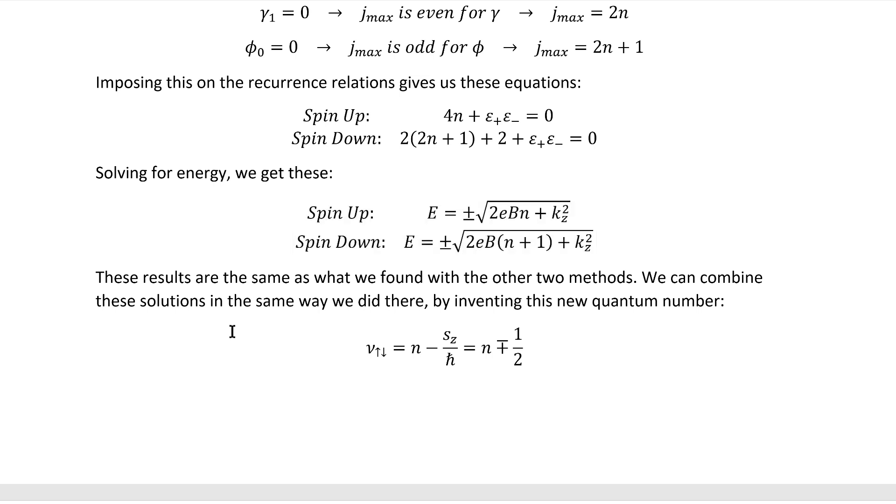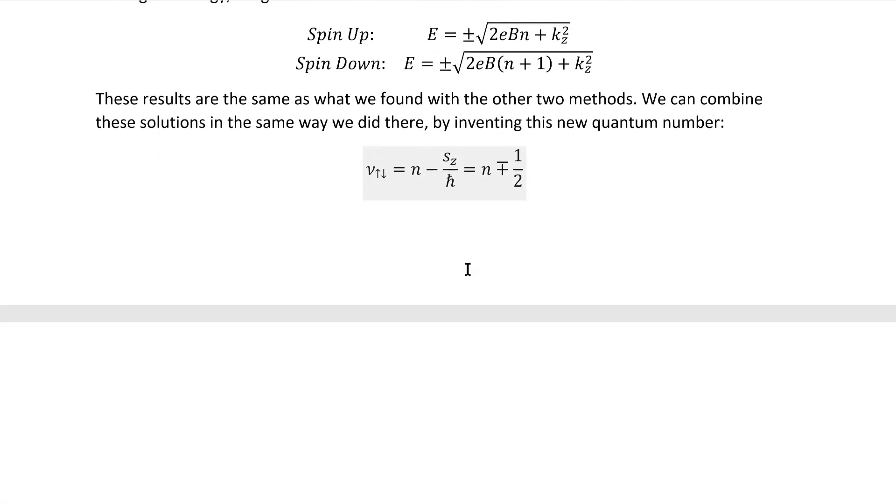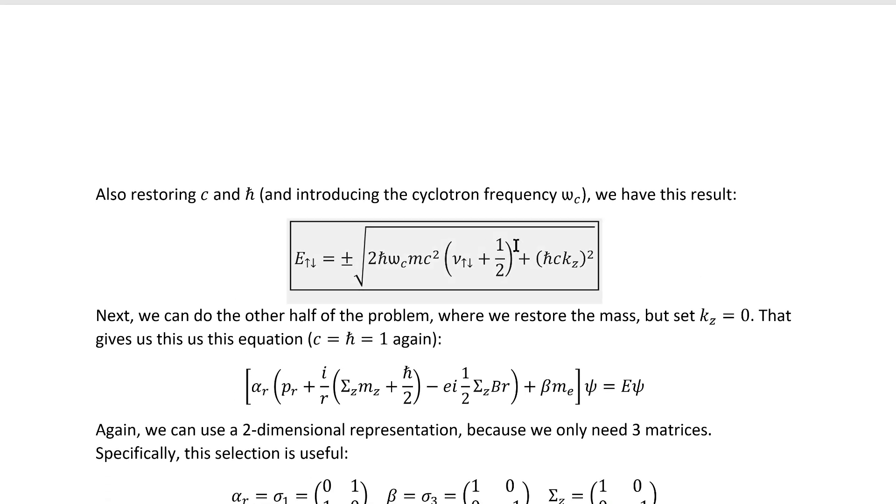These results are the same as what we found with the other two methods. We can combine these solutions in the same way we did there by inventing this quantum number. We have this result, which should look familiar, at least from the Cartesian coordinates video. Next, we can do the other half of the problem.